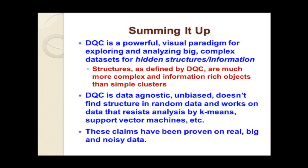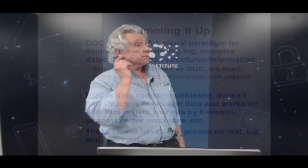To summarize: DQC is a new, powerful visual paradigm for exploring and analyzing big complex data sets. Big complex data sets sometimes contain non-trivial structures — not simple clusters but extended objects that persist. They reveal that subsets of your data contain unexpected multivariate correlations that are sometimes parametrizable in fewer variables than you think. We can pull them out, identify them, study them, and look at only the subset of interest. These are complex, information-rich objects. They don't always occur — many data sets don't have these structures — but they occur frequently enough that knowing they can exist and be exploited is very important.